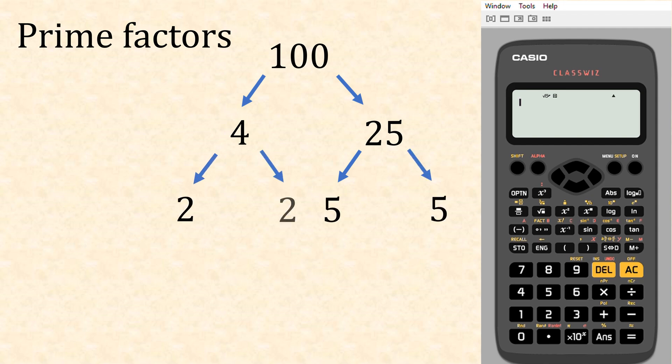So we'd write that as two times two times five times five, and the way we'd write that is two to the power of two times five to the power of two. Now let's try it on the calculator.